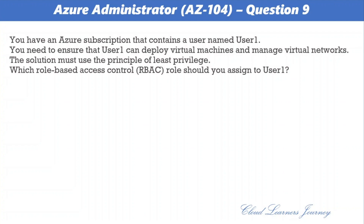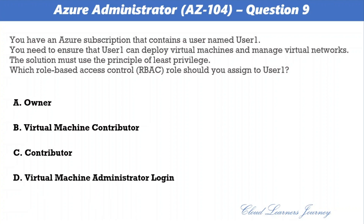Question number nine. You need to ensure that User One can deploy virtual machines and manage virtual networks, using the principle of least privilege. Options: a) Owner, b) Virtual Machine Contributor, c) Contributor, d) Virtual Machine Administrator Login. The correct option is c) Contributor. Contributor grants full access to manage all resources but does not allow assigning roles in Azure RBAC. Owner also assigns roles; Virtual Machine Contributor only manages VMs without network or storage access; Virtual Machine Administrator Login is for portal login as administrator.